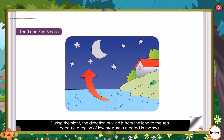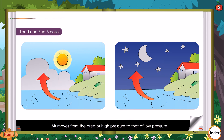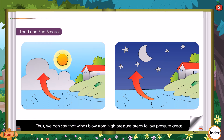During the night, the direction of wind is from the land to the sea, because a region of low pressure is created in the sea. Air moves from areas of high pressure to areas of low pressure. This makes winds blow, and thus we can say that winds blow from high pressure areas to low pressure areas.